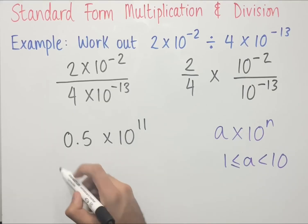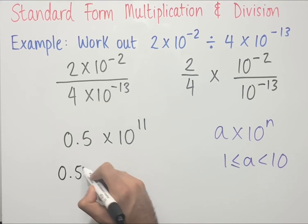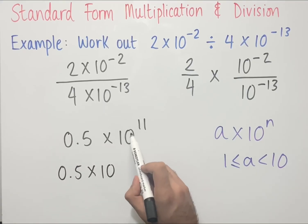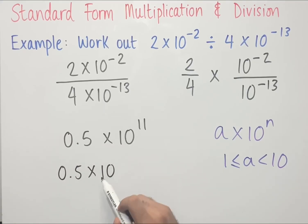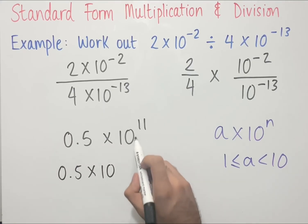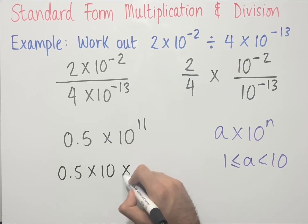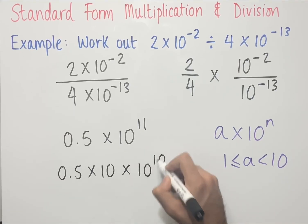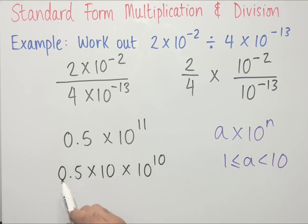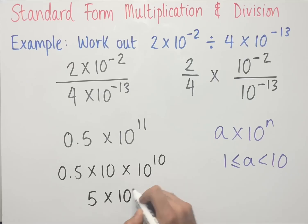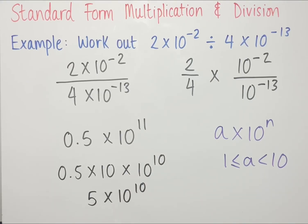So 0.5 times 10 — since we've taken a 10 from the power of 11 and used it here, we now need to reduce the power by 1, giving us 10 to the power of 10. So 0.5 times 10 equals 5, and then we multiply by 10 to the power of 10. This answer, 5 times 10 to the power of 10, is now in standard form.